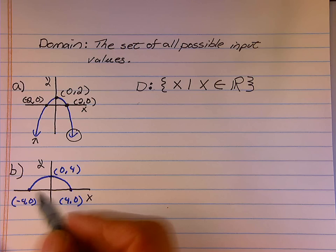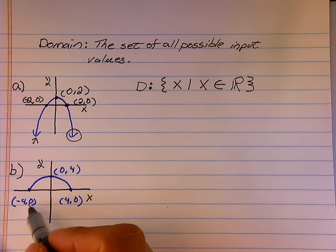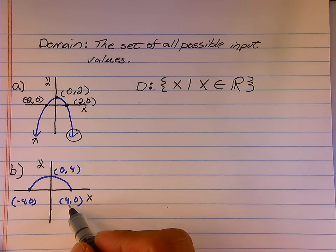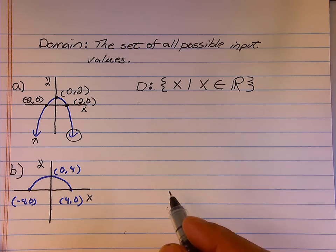Now, for Graph B, we notice that the x value to the furthest left is negative 4. The x value to the right is positive 4, and there is an x value everywhere in between.